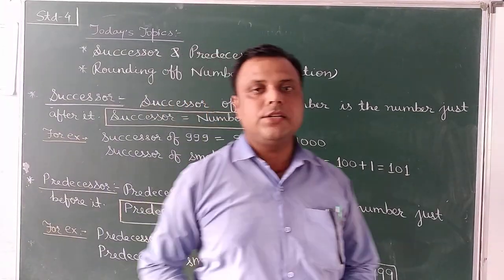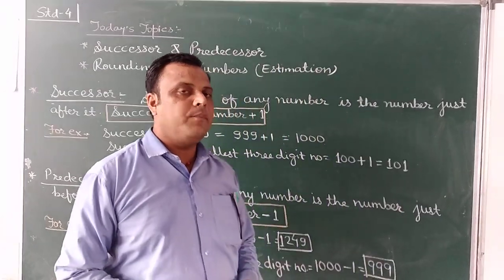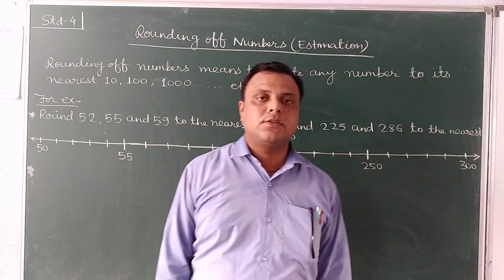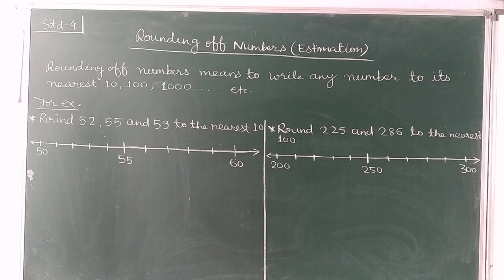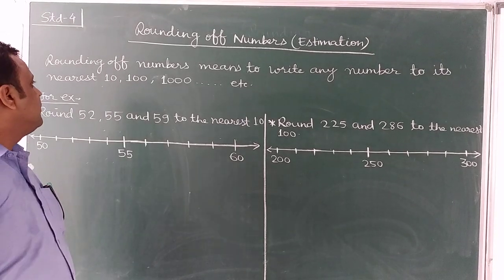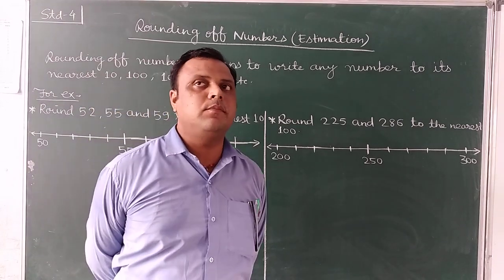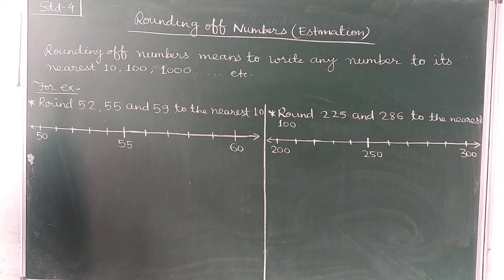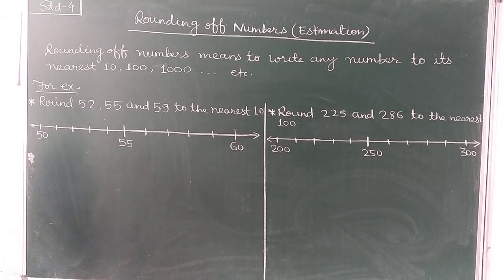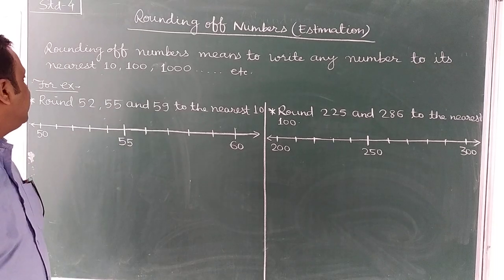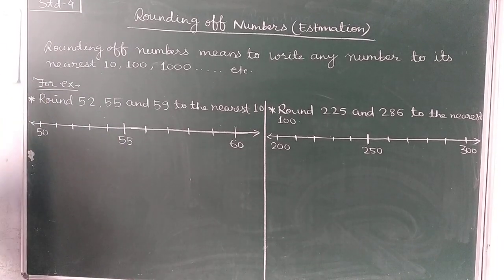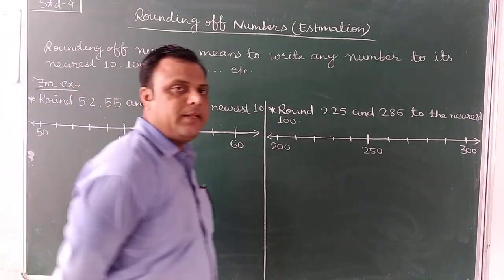So that is all about successor and predication. Now we move to the second topic, which is called rounding of numbers, also known as estimation. Rounding of numbers means to write any number to its nearest 10, 100, 1000, and so on. I am going to explain this topic by giving a few examples.